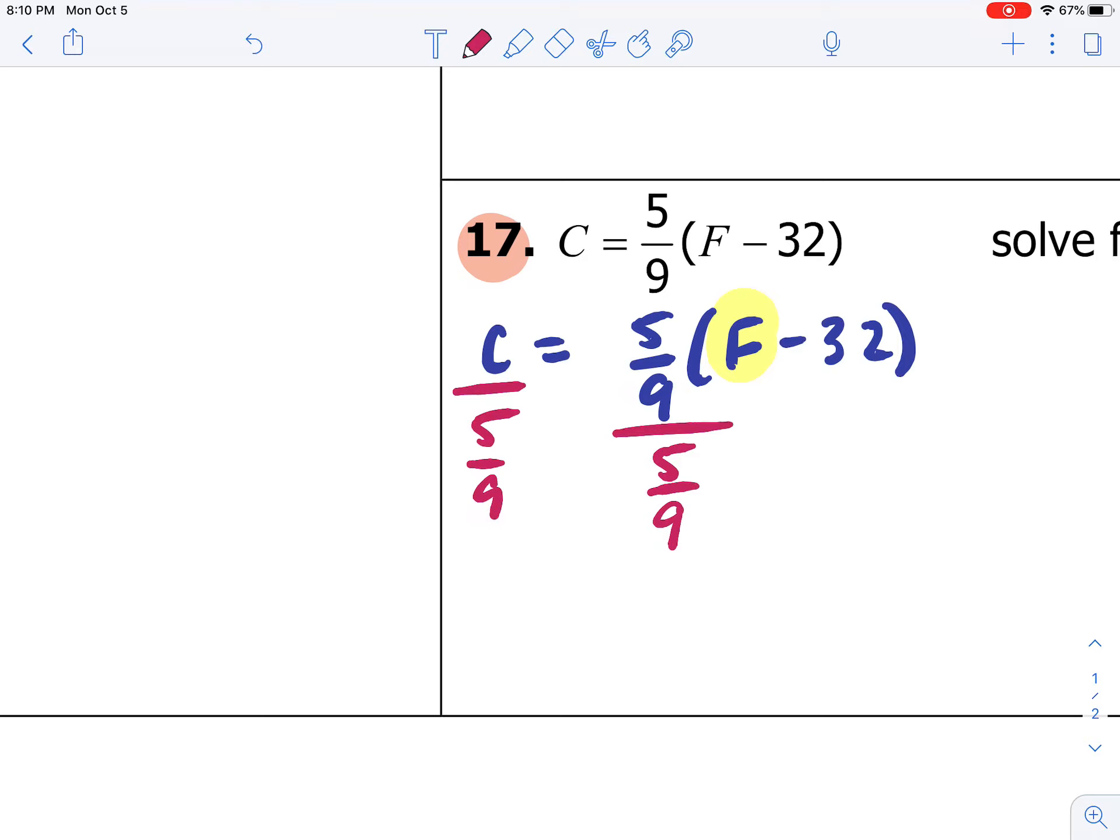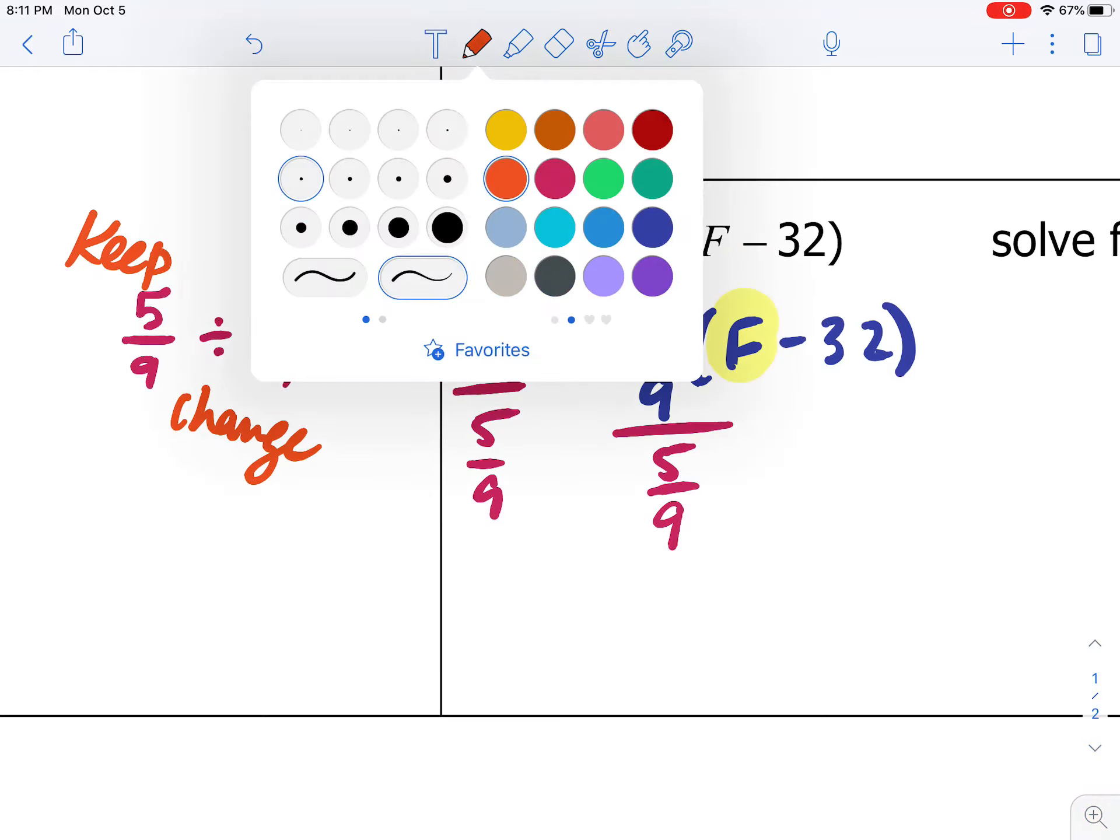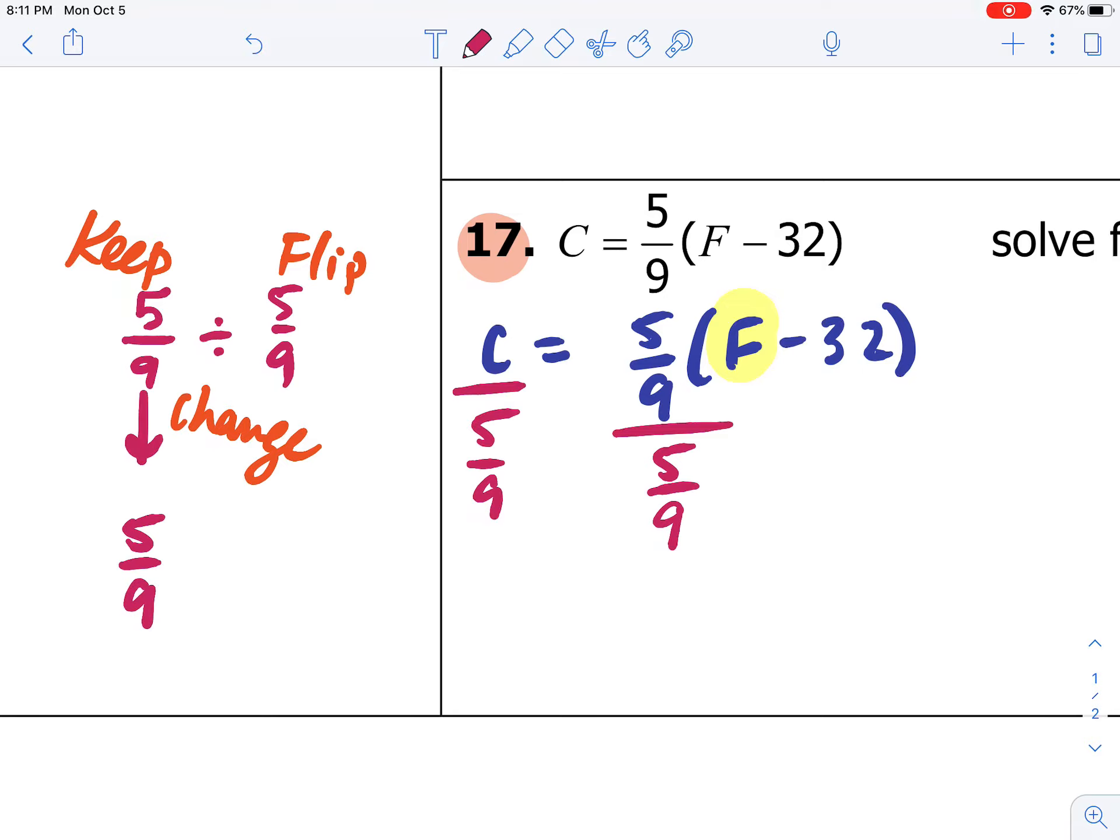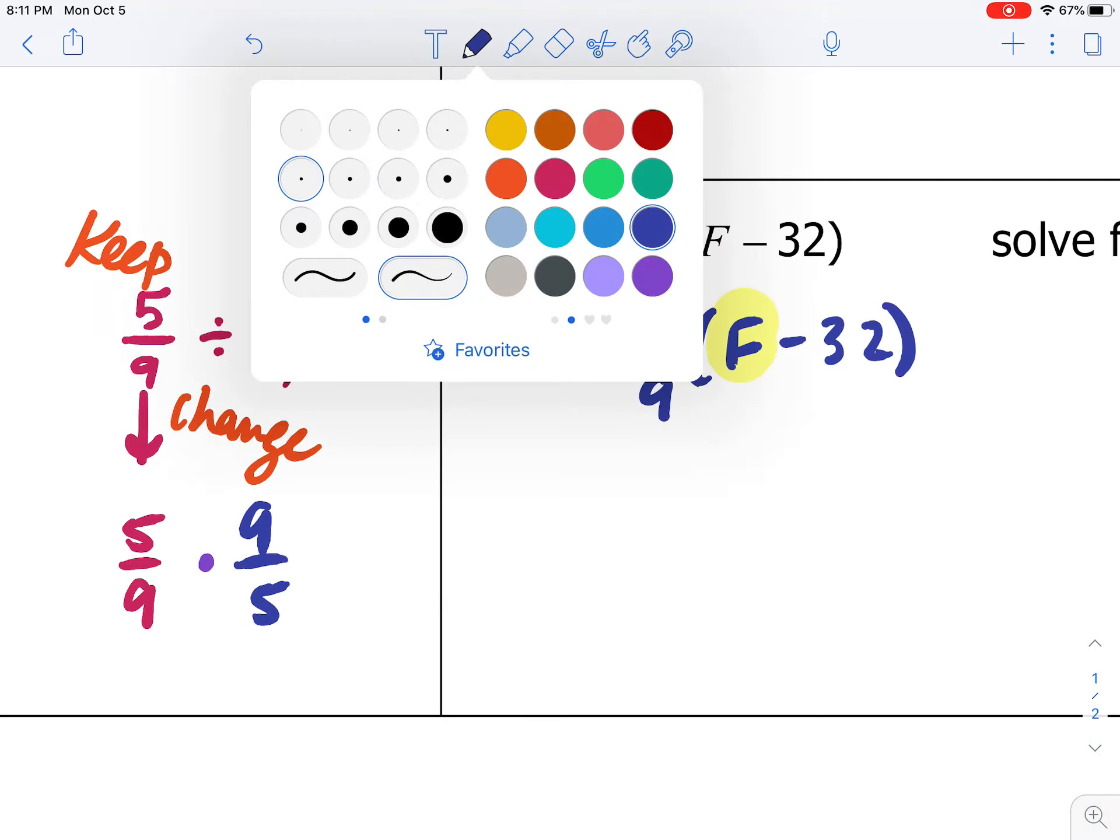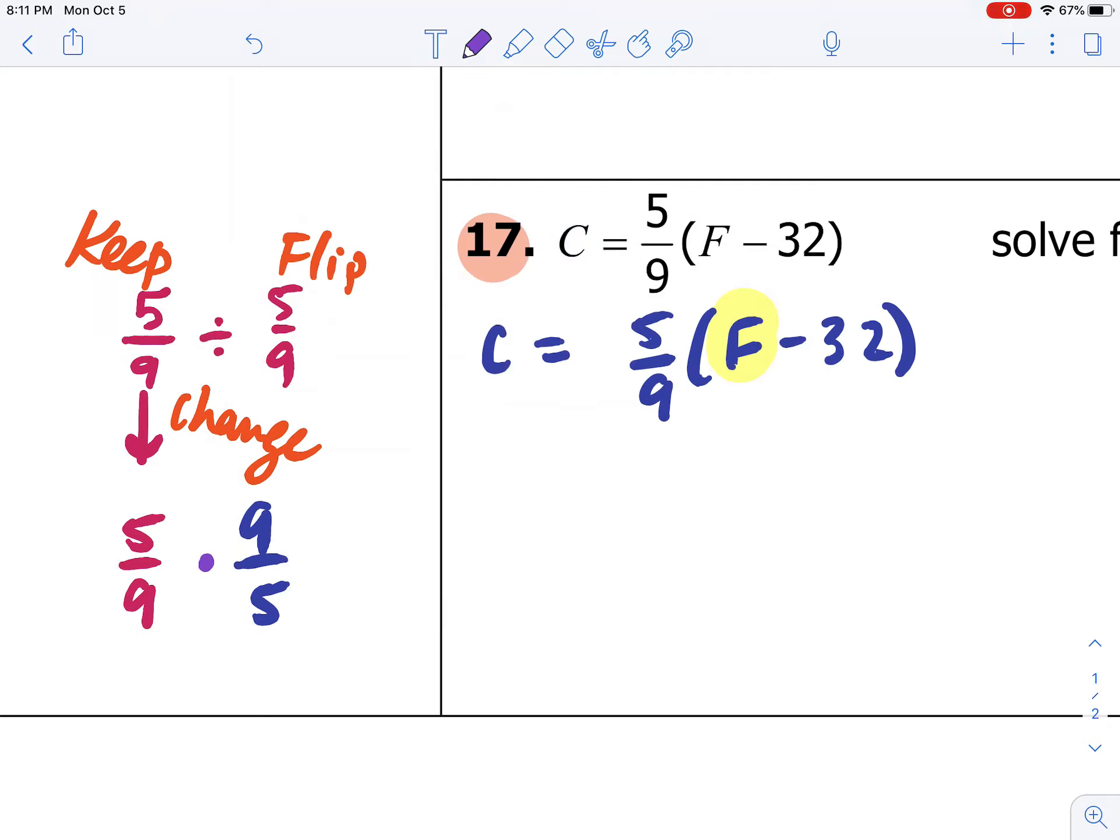However, let's think about what we're doing here. We have 5 over 9 divided by 5 over 9. Remember from the other day when we wanted to divide two fractions, we do keep, change, flip. So what we do is we keep the first fraction, 5 over 9. That stays 5 over 9. We change division to multiplication, and we flip the second fraction so it's 9 over 5. So it's much easier to multiply both sides by 9 over 5 than it is to divide both sides by 5 over 9. So that's what we'll do, because they equal the same thing.